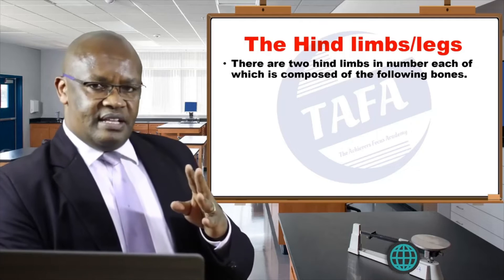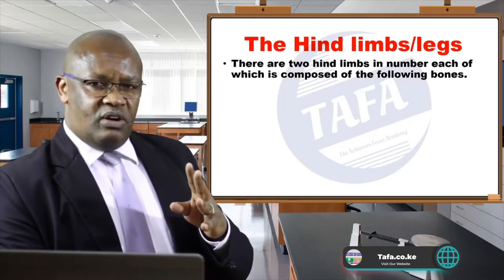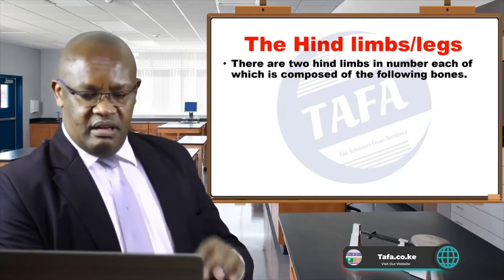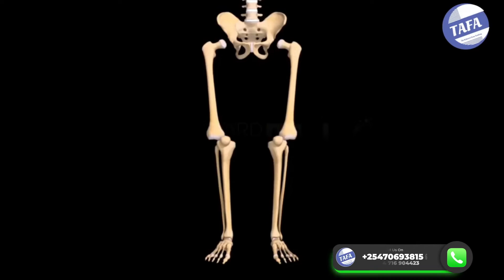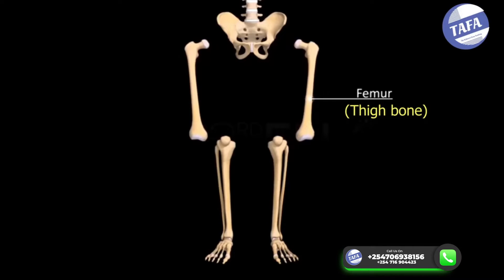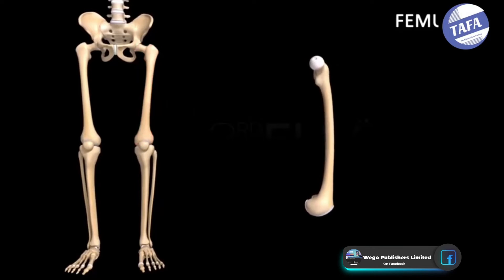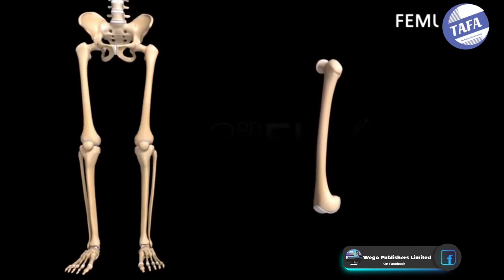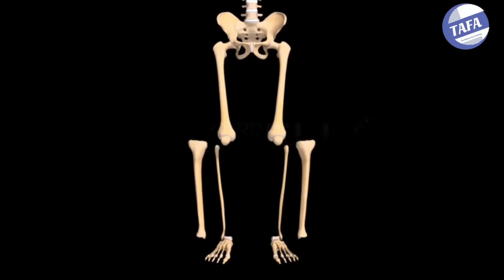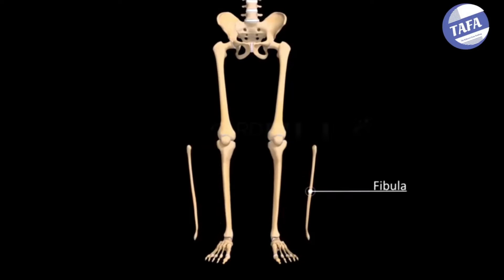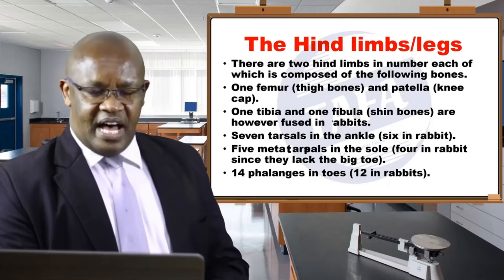The first bone, the uppermost bone which articulates with the pelvic girdle, is a bone known as the femur, also known as the thigh bone. The femur articulates with the tibia and fibula, which form the lower leg. Between the two there is another small bone known as the patella, or kneecap.